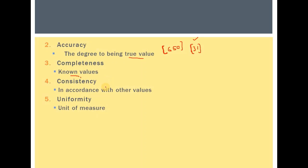The consistency problem in the data means to what degree values are in accordance with the other values. The consistency aspect of data is looked into from the perspective of the domain of the data. For example, if all the cars in the dataset have four wheels, then a car with three or five wheels is going to be inconsistent with the rest of the data.